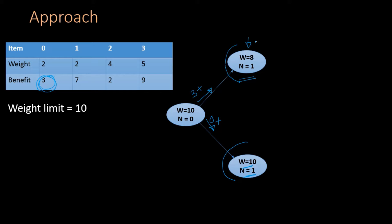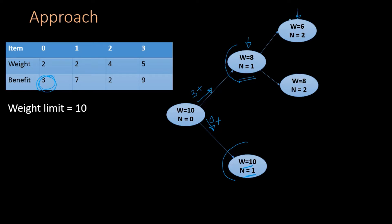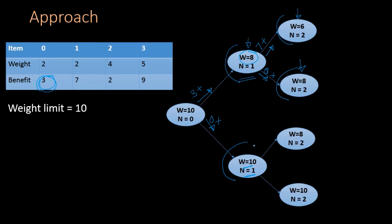At state w=8, n=1, we look at item 1 with two choices: include or exclude. Including item 1 (weight 2) leads to state w=6, n=2; excluding leads to state w=8, n=2. The include path yields benefit 7 plus whatever state w=6, n=2 returns; the exclude path yields 0 plus whatever state w=8, n=2 returns. The same logic applies to the other states at this level.